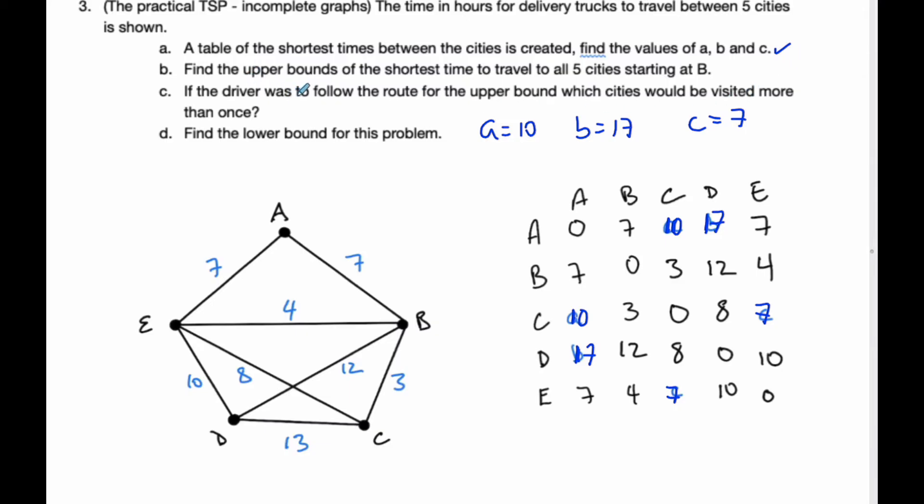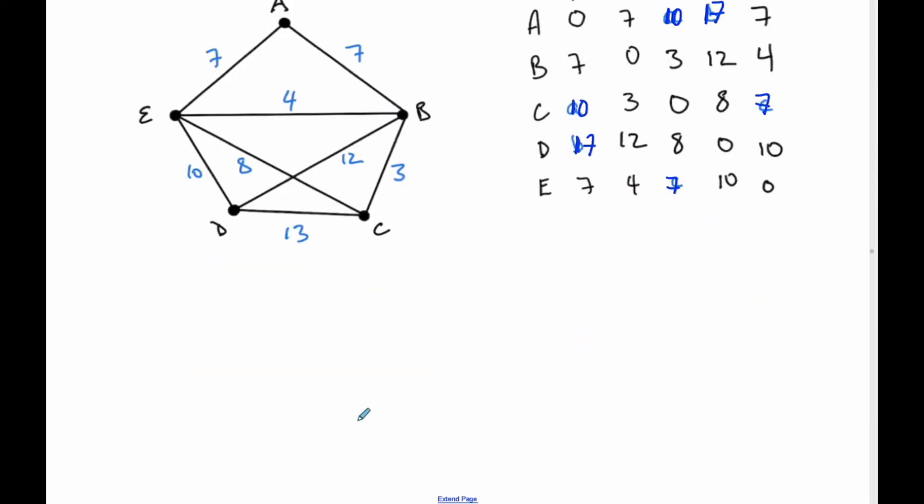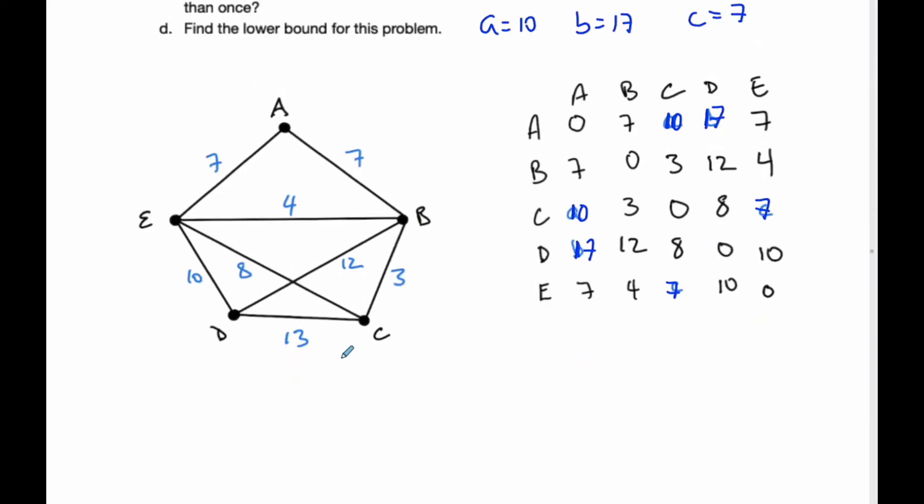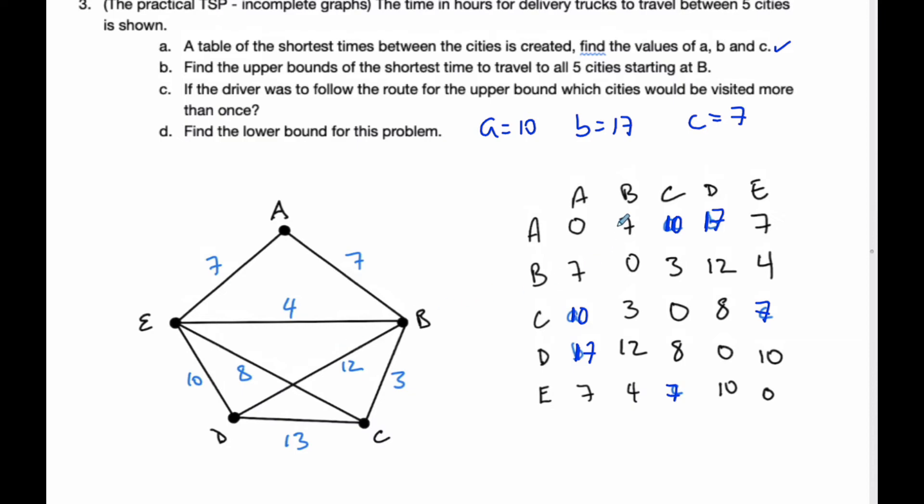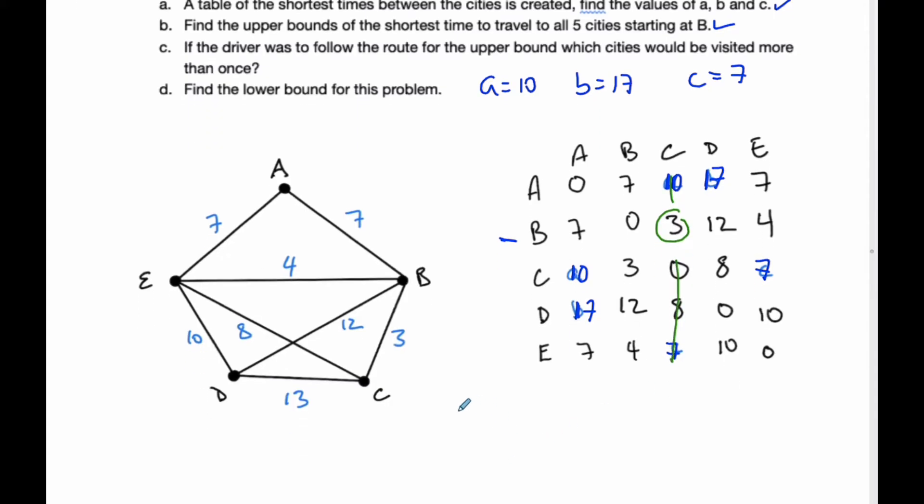Now it says find the upper bounds of the shortest time to travel to all five cities starting at B. To do the upper bound, we're going to use the nearest neighbor algorithm starting at B. If I look across here, my first one I'm going to choose is 3 since it's the smallest. So I'm going from B to C, which has a weight of 3.